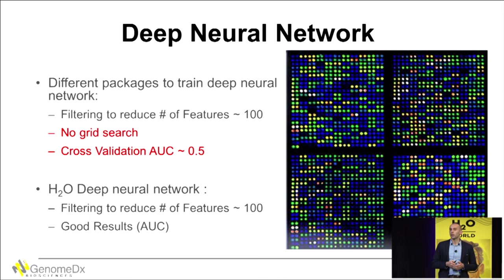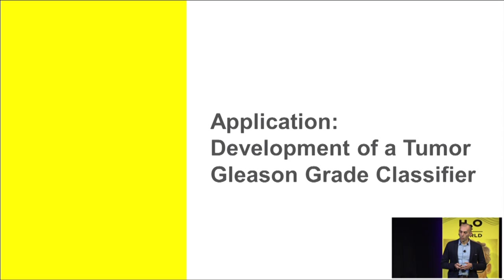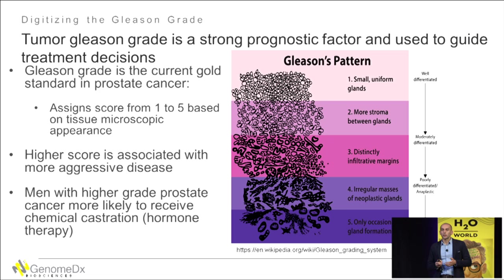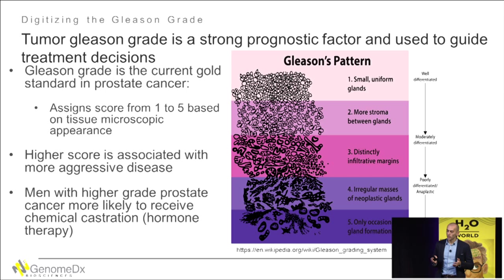Following a Kaggle competition, I found that H2O has deep learning. I got interested, did the same filtering process, put my data into it, and was able to get good results. One of the applications we used it for is to develop a tumor Gleason grade classifier. The Gleason grade is a scoring system for cancer tissue based on the microscopic appearance of the tissue.